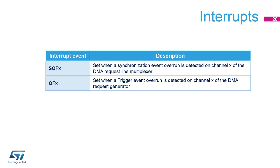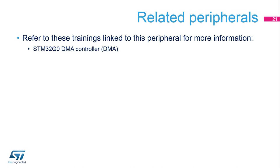An interrupt can be generated for a synchronization event overrun in each DMA request line multiplexer channel, and a trigger event overrun in each DMA request generator channel. In both cases, per-channel individual interrupt enable bits are available. Please refer to the training link to this peripheral for more information.